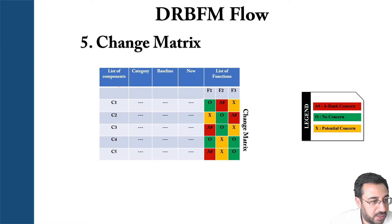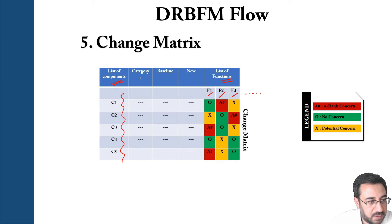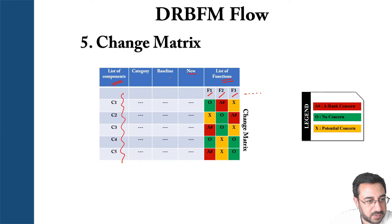The change matrix consists of X and Y directions. On one axis you have the list of components, and on the other you have the list of functions — function one, function two, function three, and so on. For each component you include its category, the baseline design, and the new design.